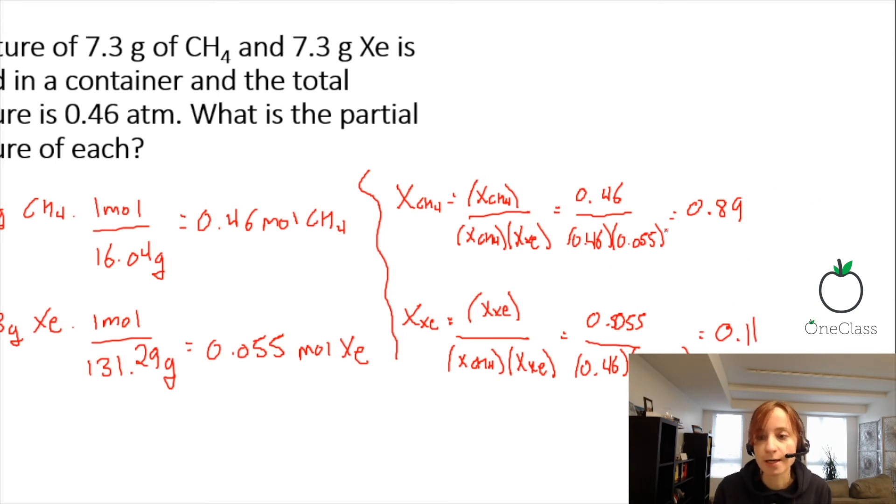So your mole fraction should add up to one. That means that you've accounted for all of the moles properly. So now we are going to use that to figure out our partial pressures of each.